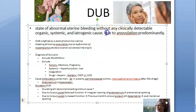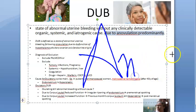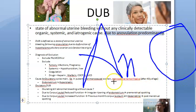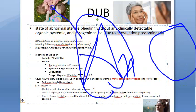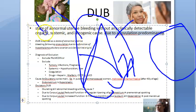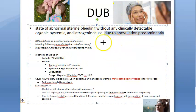DUB is mostly anovulatory, though it can be ovulatory or anovulatory. Anovulatory DUB is more common. Anovulatory cycles occur in puberty or perimenopause, causing irregular bleeding not due to a tumor or endocrine cause — just an anovulatory cycle. So mostly remember: puberty or perimenopause leads to anovulatory cycles, which can cause DUB.